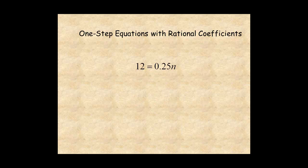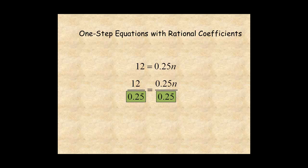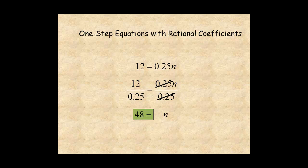For this example, since the variable is being multiplied by 0.25, divide both sides of the equation by 0.25. On the right, 0.25 divided by 0.25 equals 1, and you have 1 times n, which is just n. On the left, 12 divided by 0.25 equals 48. And the solution is n equals 48.